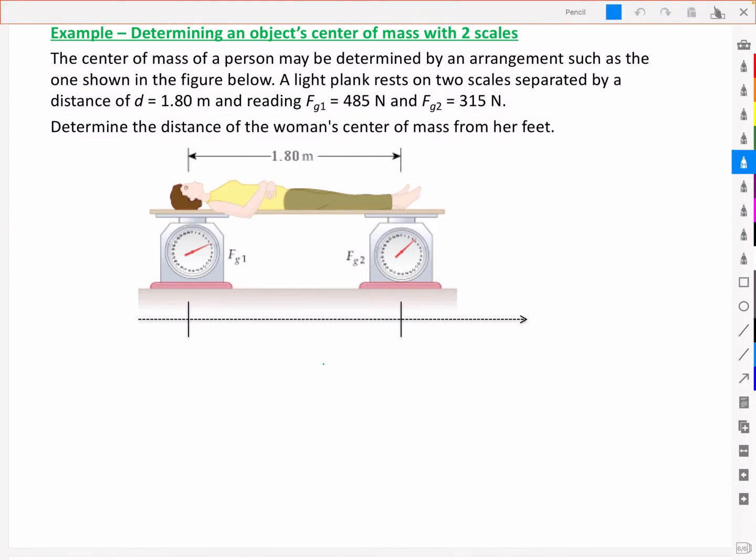Let's put some of these numbers on here. We've got Fg1 equal to 485 newtons and Fg2 equal to 315 newtons.